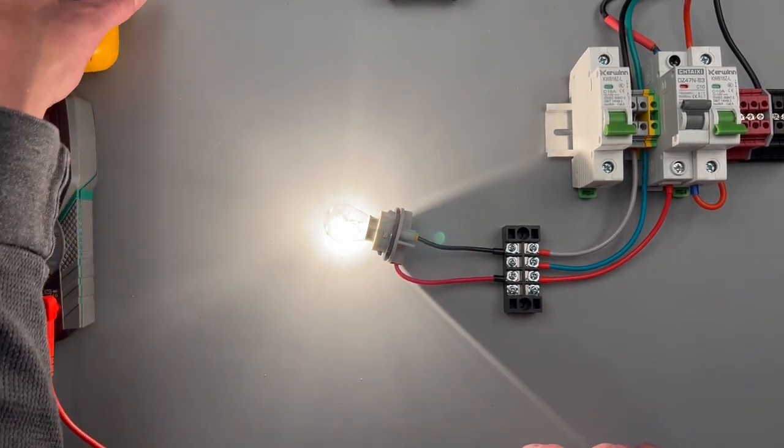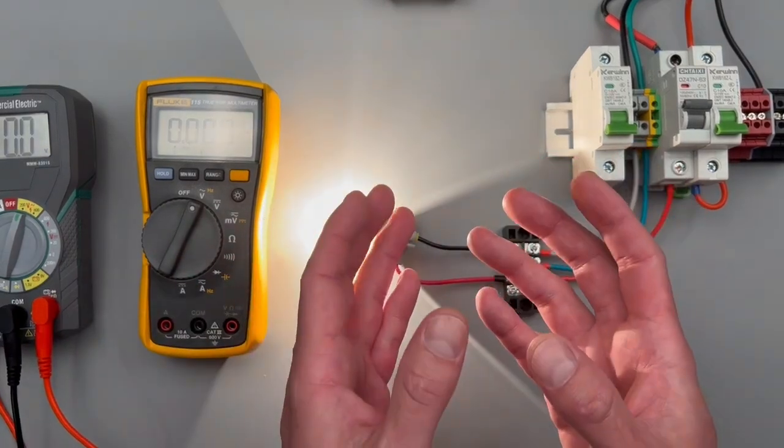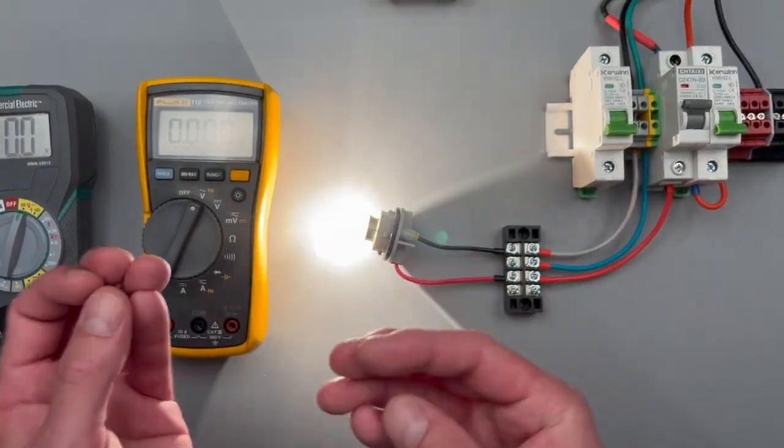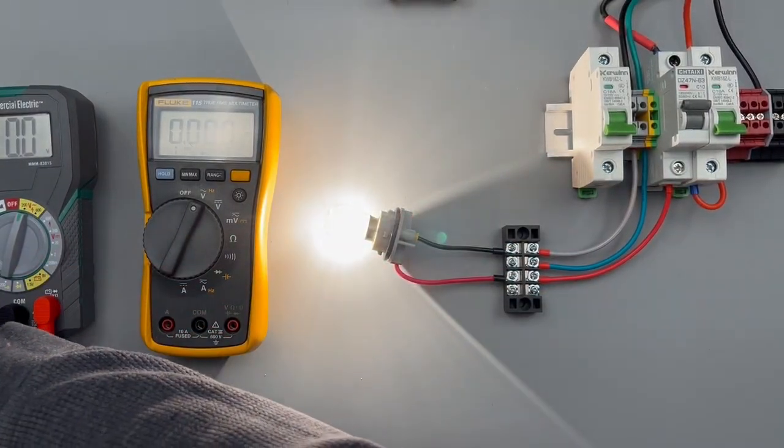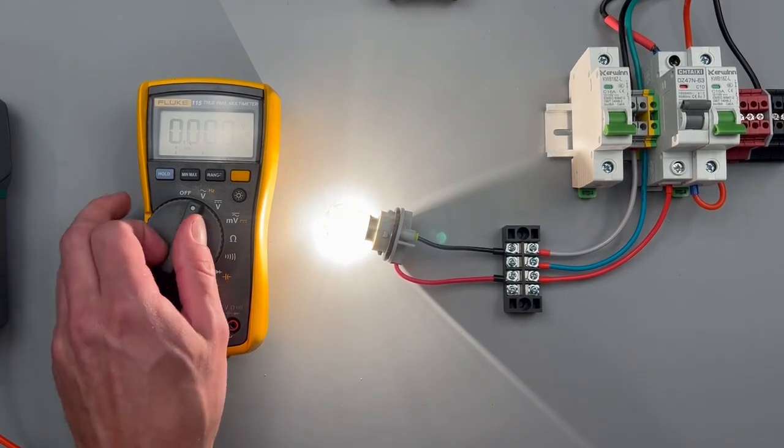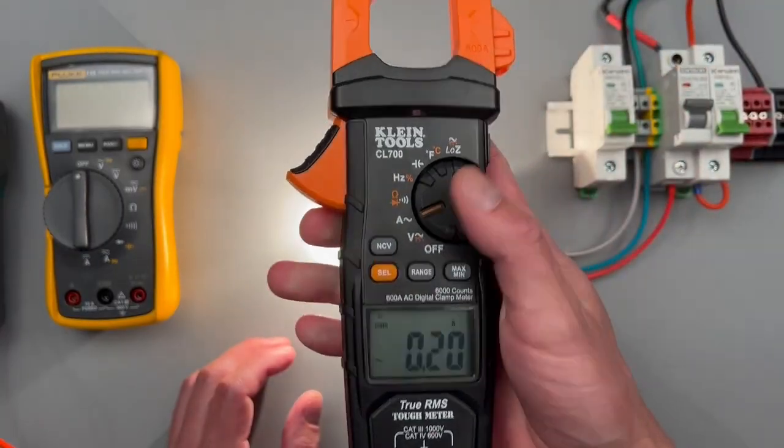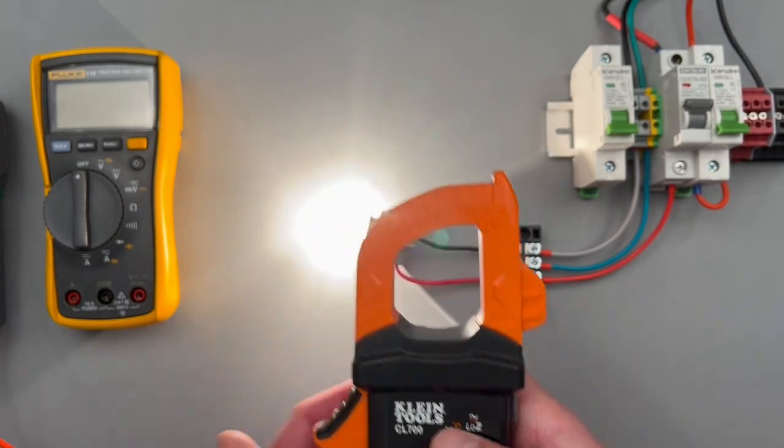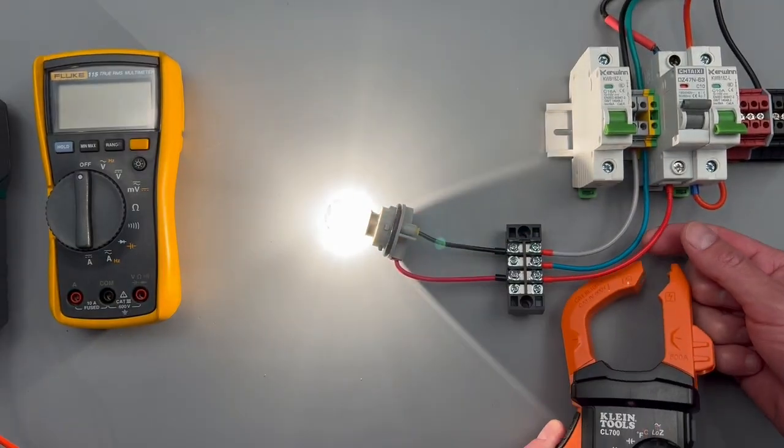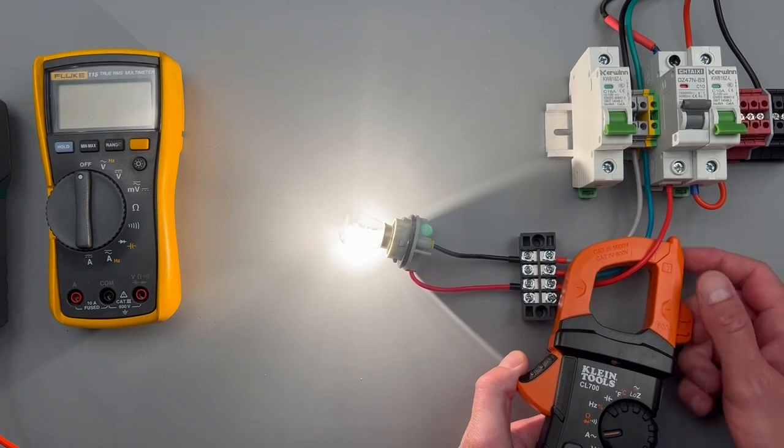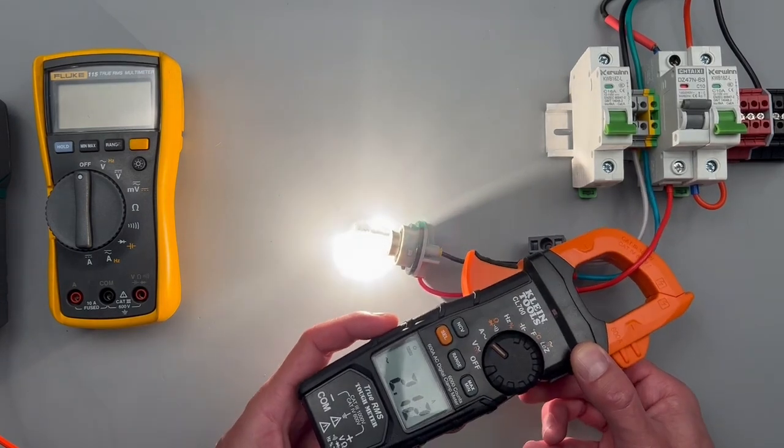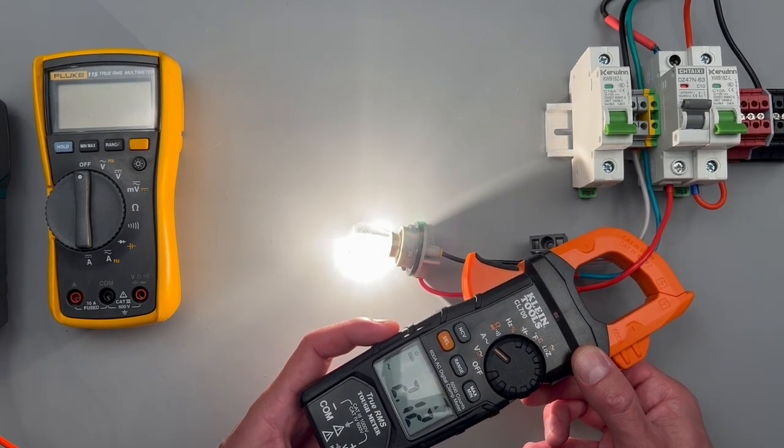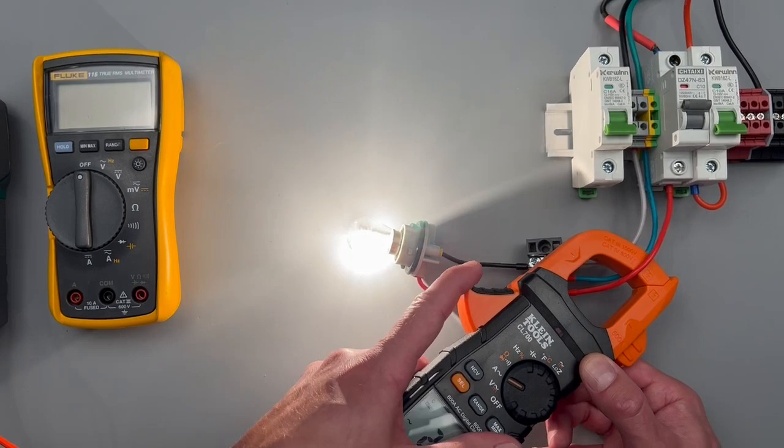For measuring current we can either use an amp clamp or we can measure in series. On this meter it's only rated for AC amperage—that's what the clamp's rated for. You're going to want to put your amp clamp around either the hot or the neutral, but not both. It's showing me it's drawing two amps of current. Now I can do that around the neutral wire and still get the same reading.